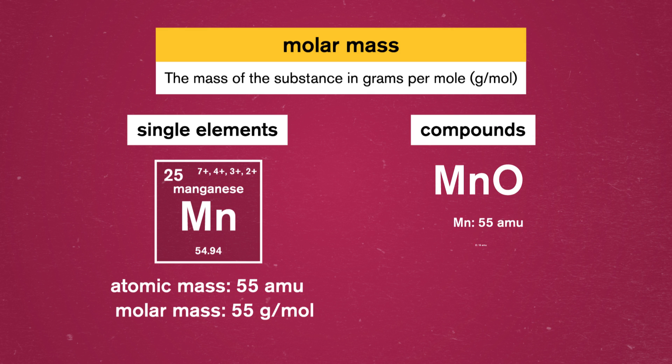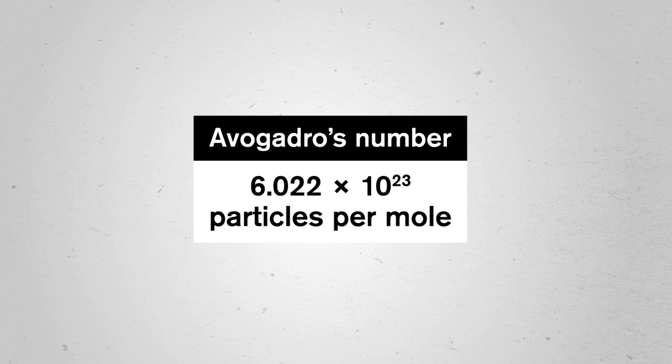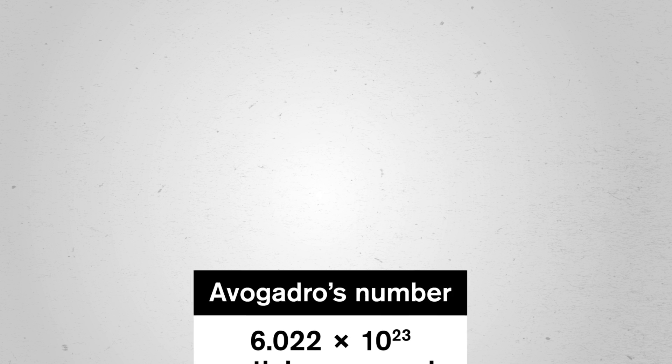For compounds, we'd add all the atomic masses of the elements that make up our substance to get its total molar mass. Avogadro's number, which is 6.022 times 10 to the 23rd particles per mole, is what chemists use to determine how many particles are in an amount of moles, or vice versa. This number can be used for calculations with any substance — it's the same for any element or compound.